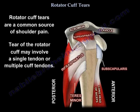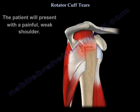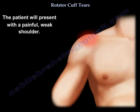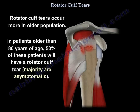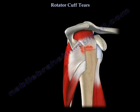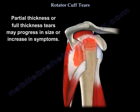Rotator cuff tears are a common source of shoulder pain. They can involve a tendon or several tendons. The patient presents with a painful, weak shoulder. Rotator cuff tears occur more in the older population — in patients older than 80 years old, 50% will have cuff tears, though the majority are asymptomatic. Partial thickness or full thickness tears can progress in size and can increase in symptoms.